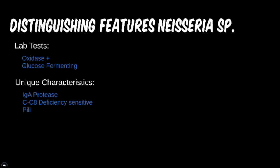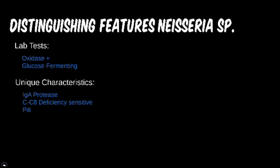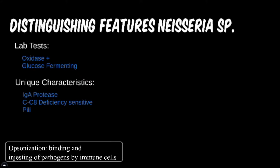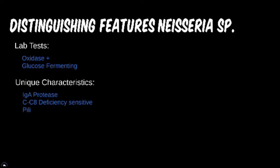Any individual with immunodeficiencies of complement needs to be concerned with encapsulated bacteria such as N. meningitidis. Without adequate quantity or quality of complement, the body is not able to opsonize encapsulated bacteria well, increasing the chance of disseminated infection. The LOS, instead of LPS, was mentioned in the intro to this module but is simply a different variant of the LPS toxin that could be mentioned on a vignette.